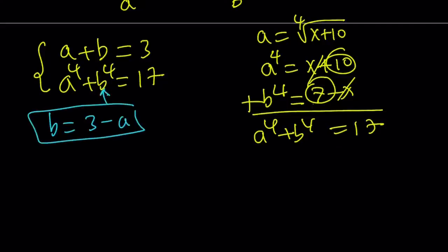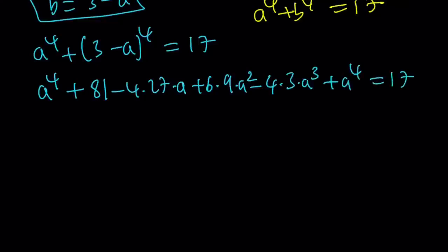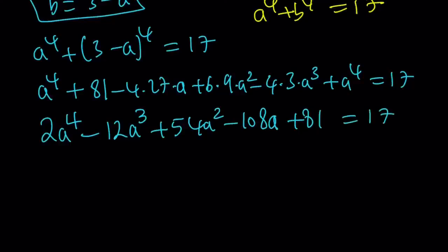So, B can be written as 3 minus A. We're going to go ahead and substitute that here. A to the fourth power plus 3 minus A to the fourth power equals 17. Again, at this point, you could probably guess the solution or the solutions. Let's go ahead and expand the 3 minus A to the fourth power. That's going to give me A to the fourth plus 81 minus 4 times 27 times A plus 6 times 9 times A squared minus 4 times 3 times A cubed plus A to the fourth and that equals 17.